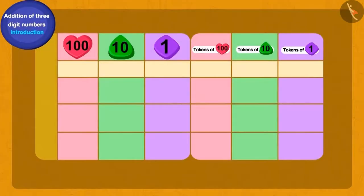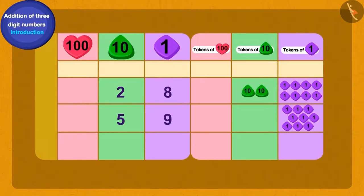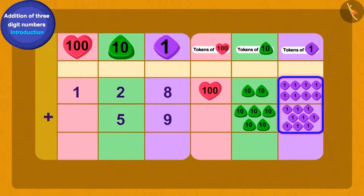Let us see how many golden eggs in total Baban has. We will add 128 and 59. First we will write 128 and 59 using tokens. Is this correct children? We have a total of 17 tokens of ones.